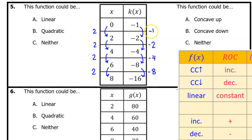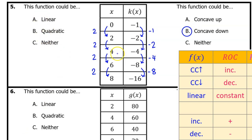We can see that the output changes are decreasing. And since the input changes are all the same, if the output changes are decreasing, that means that the overall rate of change is decreasing. That means f of x is concave down — so the answer to this side is B. If k of x was linear, then the rate of change would be constant, and all of these values would be the same. So it's not linear — we can cross it out.